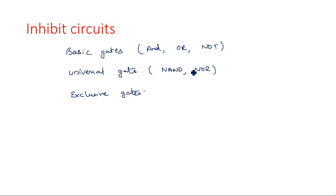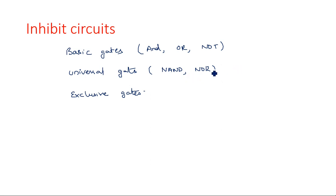Basic gates are used to construct any type of logic circuit. Universal gates — NAND and NOR — can be used to construct any type of logic gate. For example, AND operation or XOR operation can be designed using NAND gate. Exclusive gates are XOR gate and XNOR gate.